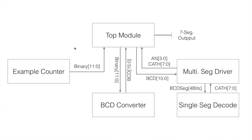What you see here is the structure of how this program wound up coming together. We've built a BCD converter that you've seen in the previous video, and then we've tied that together with some other segments. We've got a multi-segment driver since we have multiple seven segment displays tied together to do four different digits. Below that we've got a decoder that will decode per seven segment display. We've built an example counter and tied all that together via a top module.